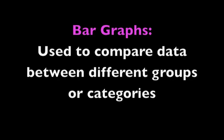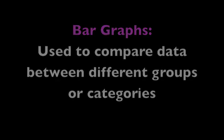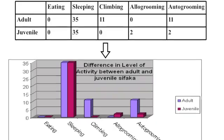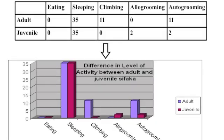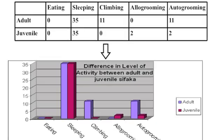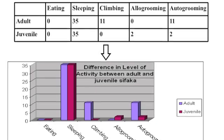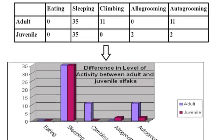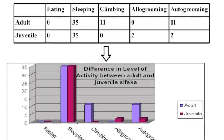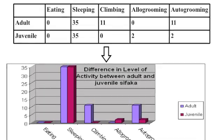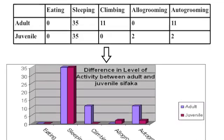Finally, bar graphs are used to compare data between different groups or categories. For this data table, we're not only comparing different activities of these savakas, but we're also comparing the adults and the juveniles. So a double bar graph would be best for this data table.